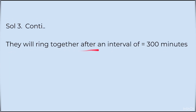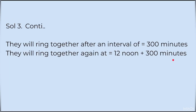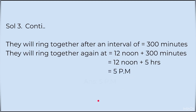They will ring together after an interval of 300 minutes. They will ring together again at 12 noon plus 300 minutes. Dividing 300 by 60 gives 5 hours. So this equals 12 noon plus 5 hours = 5 PM. The answer is 5 PM — the bells will again ring together at 5 PM.